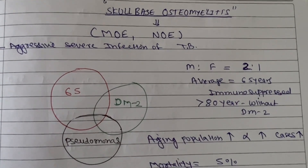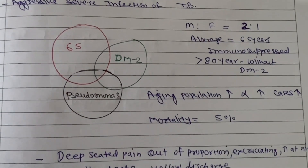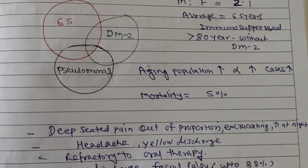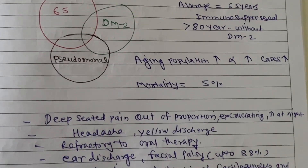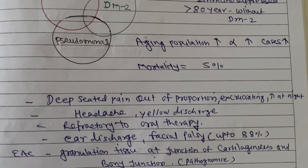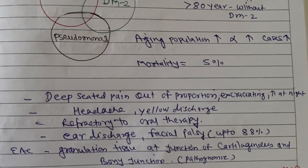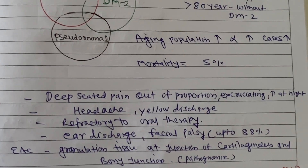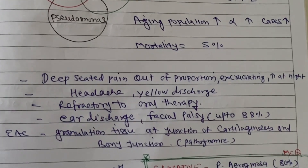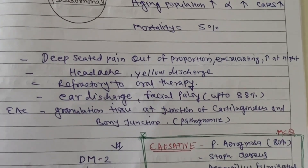It is an aggressive, severe infection of the temporal bone. The most common demographic is male, with a ratio of 2 to 1, average age of 65 years. As the aging population increases, chances of skull base osteomyelitis increase. Mortality is about 5% with treatment and 14% without treatment.